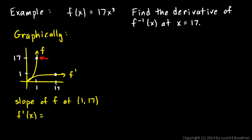f prime of x is, let's see, 17 times 3 is 51. So it's 51x squared. So we can find f prime of 1. That will be the slope of function f at an x value of 1. And that will just be 51.